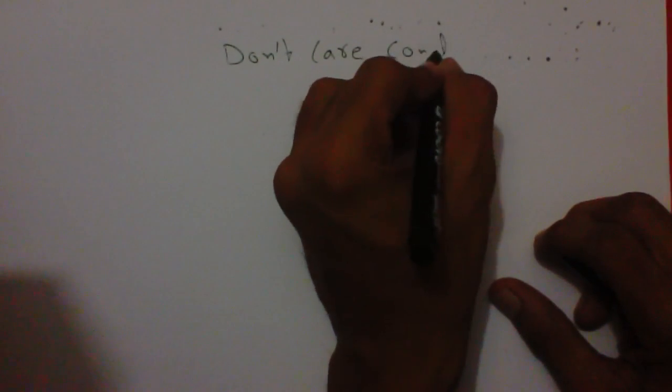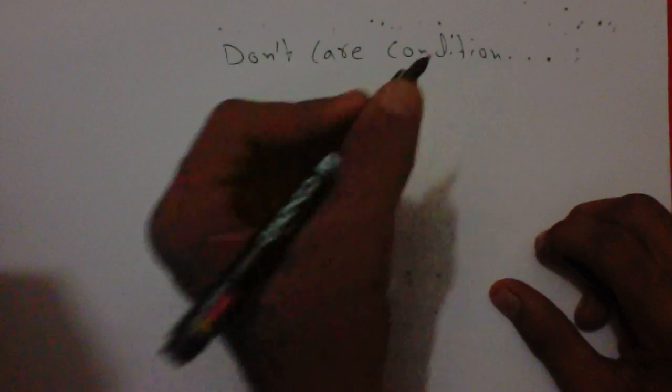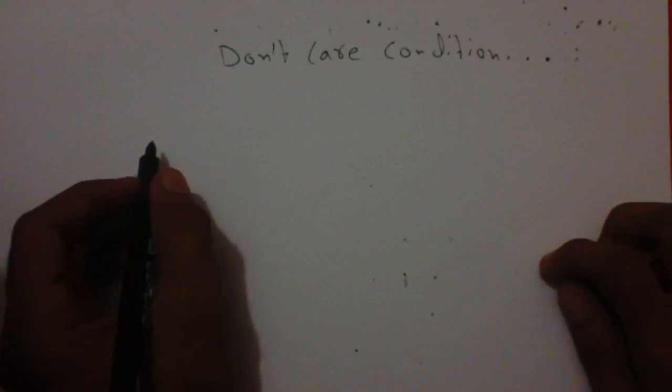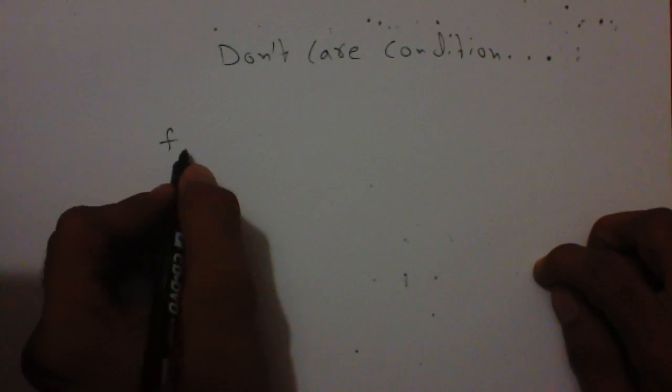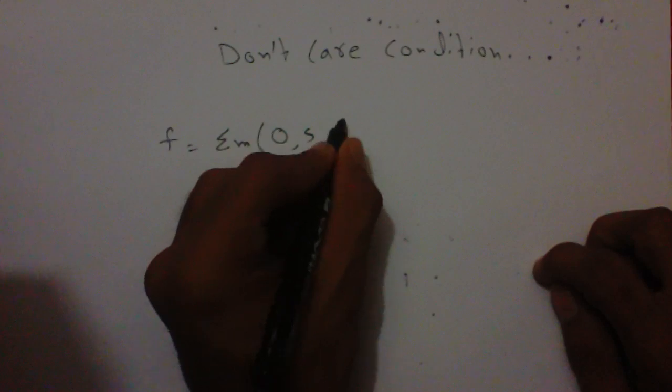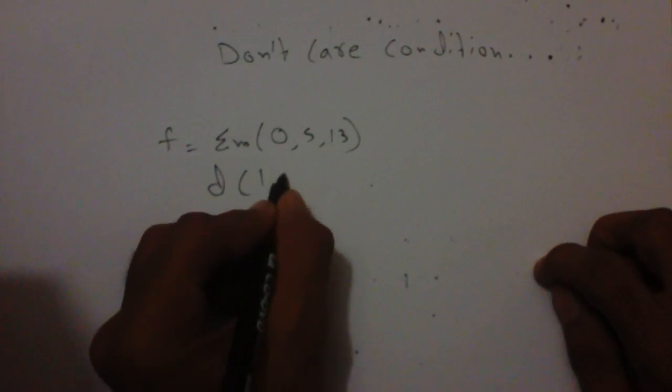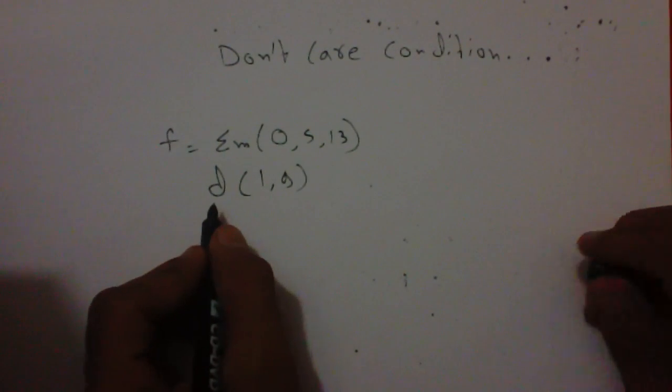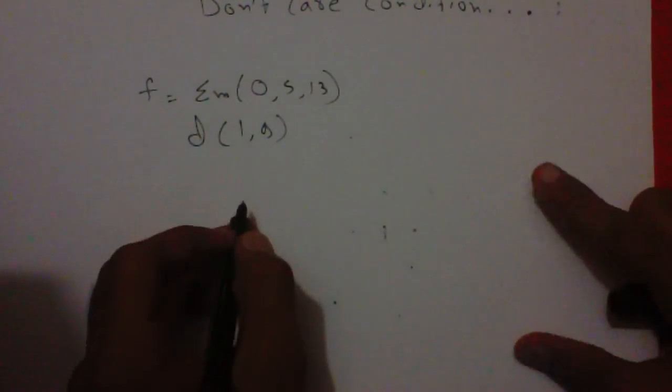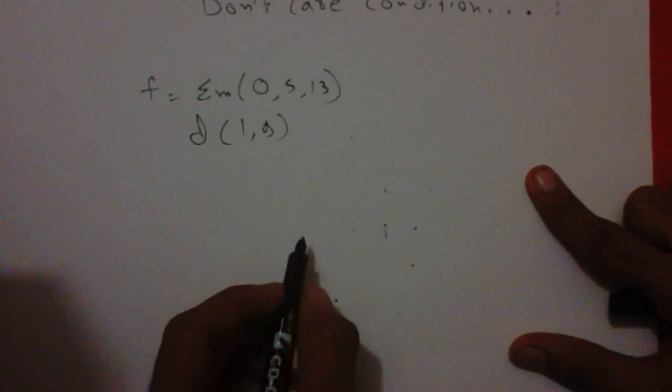In this tutorial we will learn about don't care condition in design of K-map. Let's explain this with an example. Suppose we have 0, 5, 13 min terms and 1, 9 don't care. The condition is denoted like this in a question, so we have to create a K-map for this.